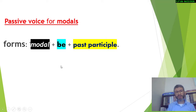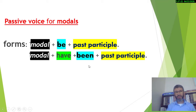In the passive, modals have two forms: modal + be + past participle, or modal + have + been + past participle. We're going to look at examples for each of these forms.